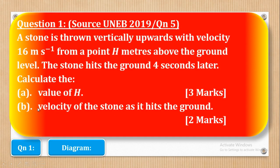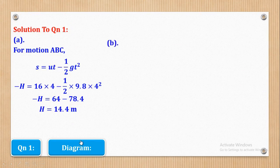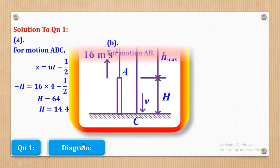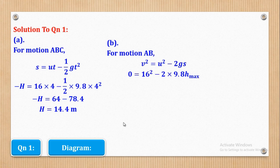Now for part B, they want the velocity with which the stone hits the ground — the value of V. For motion AB, we use the third equation of motion. The final velocity is 0, initial velocity is 16, G is 9.8, and S is H max. Substituting those values and making H max the subject gives H max equal to 13.0612 meters.